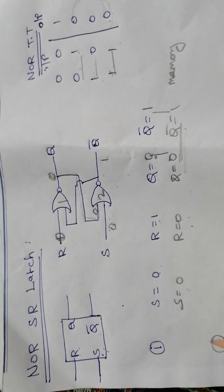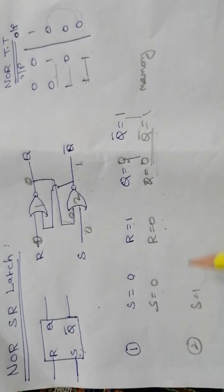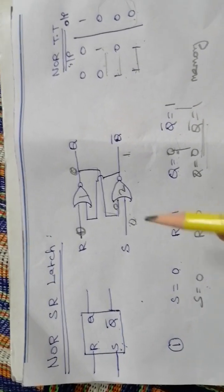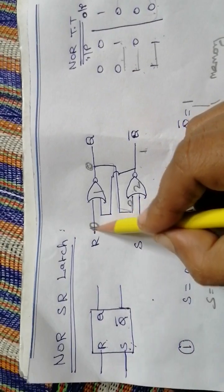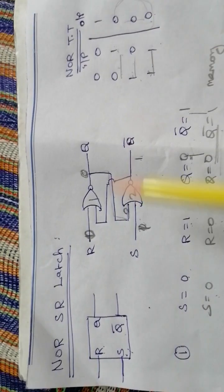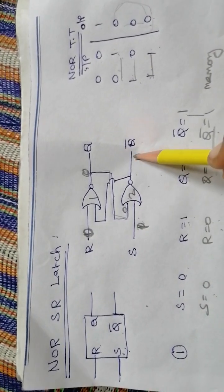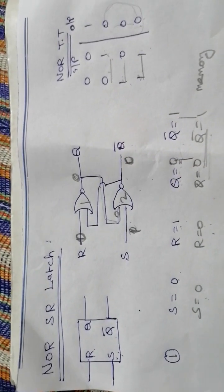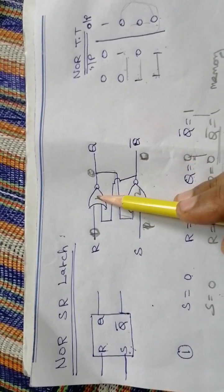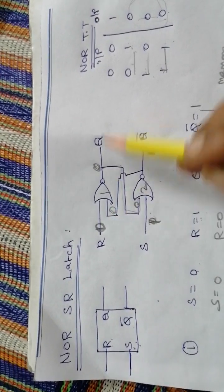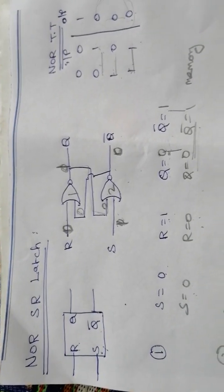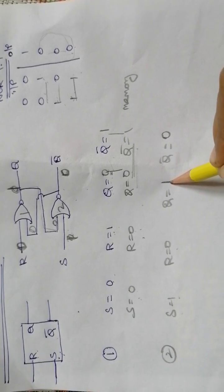Case 2: if S=1 and R=0, what are Q and Q bar? Applying S=1 and R=0 — since one input is 1, the NOR gate output is 0. So Q bar equals 0. This 0 is given to the input of the first gate; with both inputs 0,0, the output is 1. So Q equals 1.